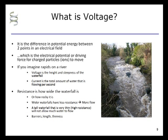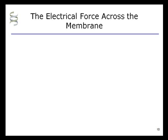In the case of both a waterfall and an electrical resistor, resistance depends upon barriers, length, and thinness. Now let's consider the electrical force across the membrane. VM is an abbreviation for the instantaneous membrane potential: V stands for voltage, M stands for membrane.